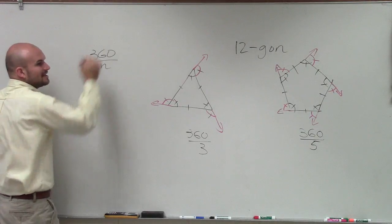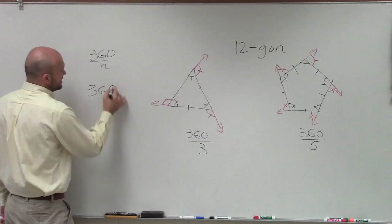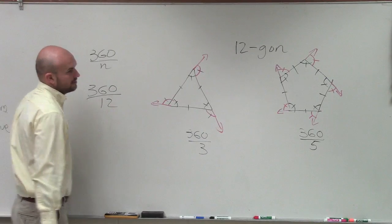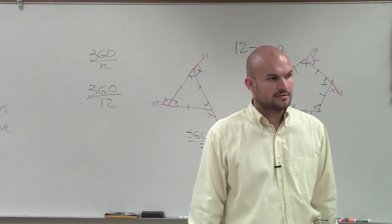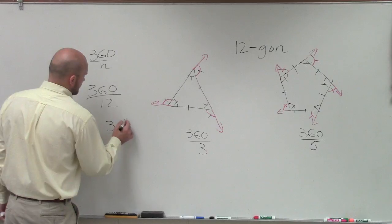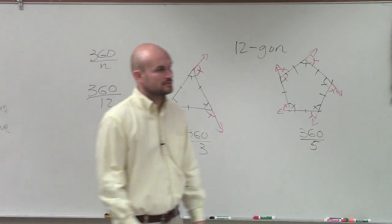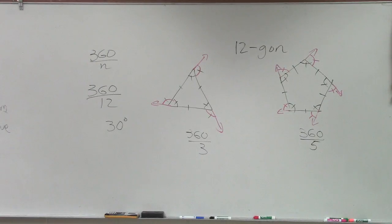So they're saying we have a 12-gon. So you do 360 divided by 12. That's it. Done. And that equals 30 degrees. OK? That's it. Done.